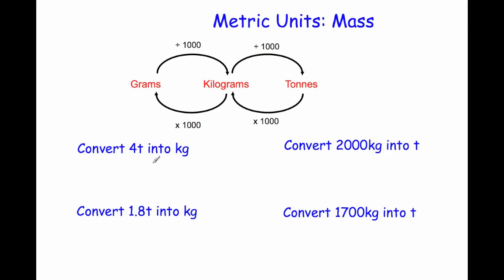Now tonnes and kilograms. Convert 4 tonnes into kilograms — we multiply by 1,000. So 4 times 1,000 equals 4,000 kilograms.